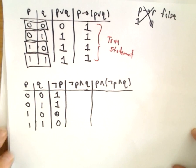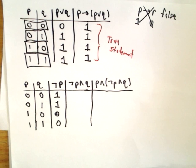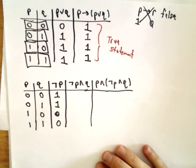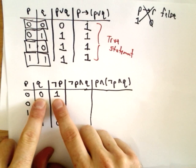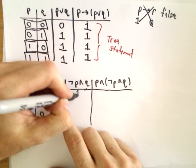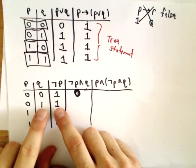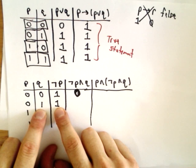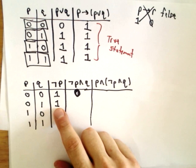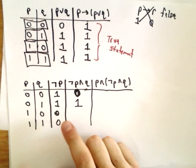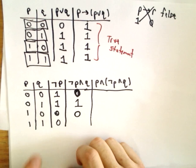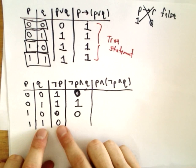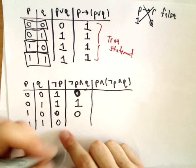So for not P and Q, recall that an and statement has a true value only if both statements are true. So not P and Q: in the first row one of the statements is false, so that and statement will be false. In the second row both statements are true so the and statement will be true. In the next row not P and Q are both false so the and statement will be false, and then again one of the statements is false so the and statement will be false.